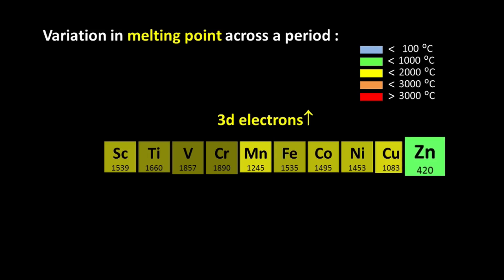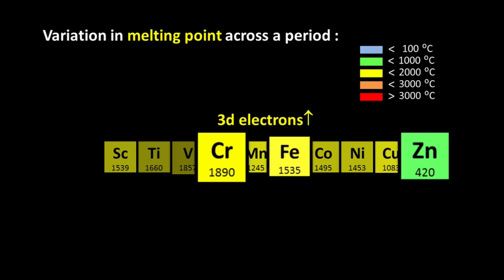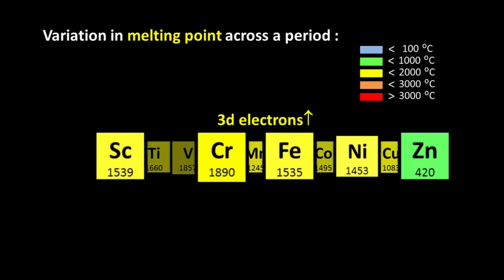Zinc has a melting point of only around 420 degree Celsius which is much lower compared to the other transition metals of the 3d series like Chromium and Manganese whose melting points are around 1500 degree Celsius. In fact, if you look carefully, you will realize that the melting point first seems to increase towards the middle of the 3d series and then it seems to decrease up to Zinc.